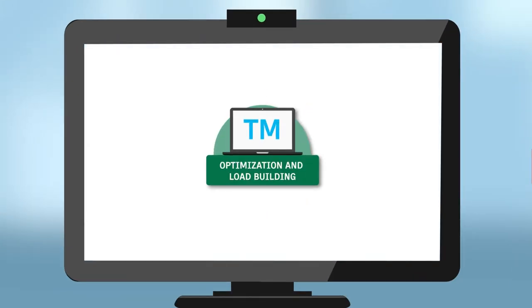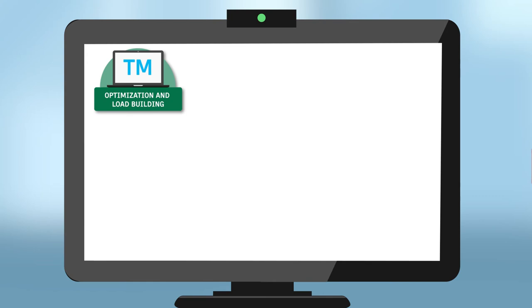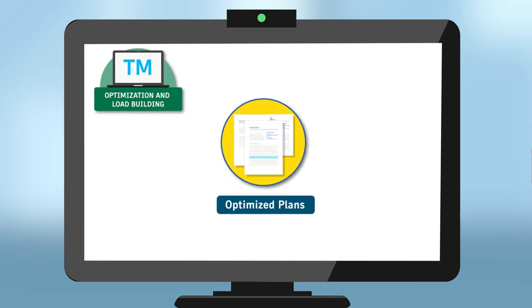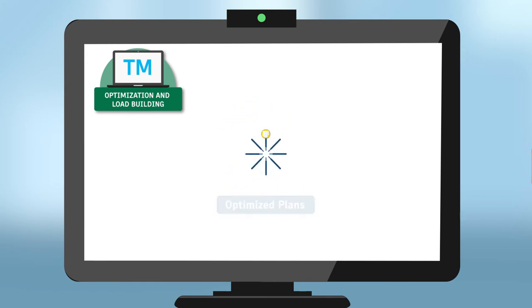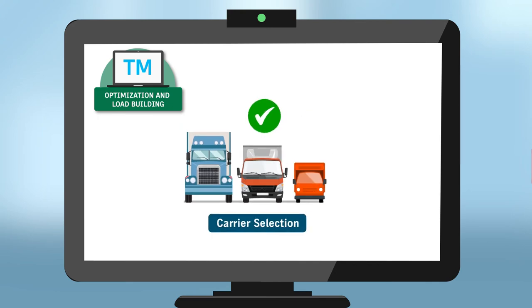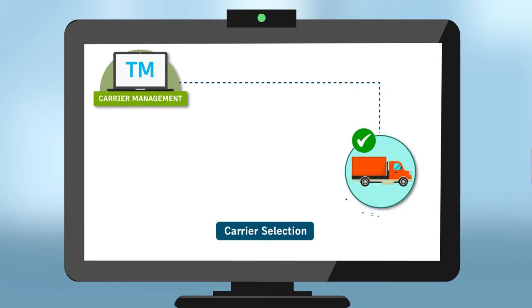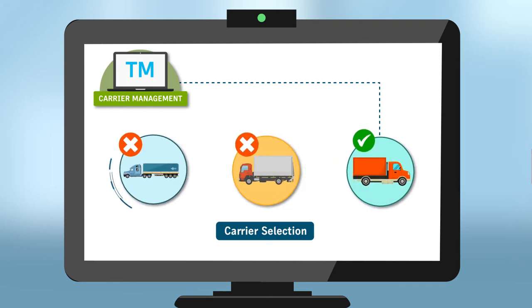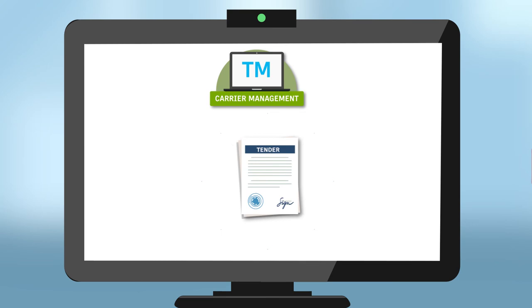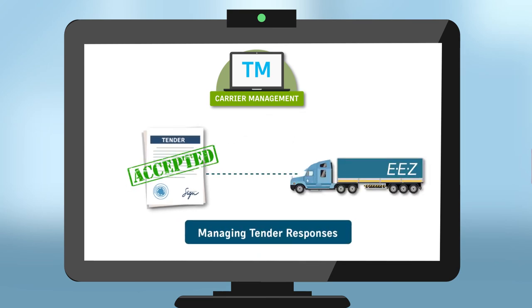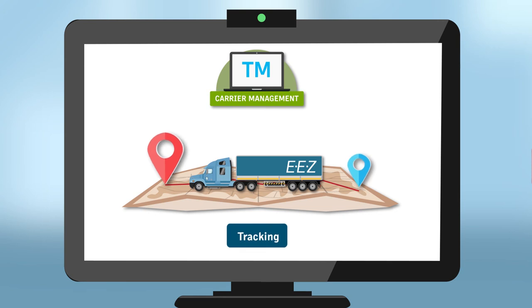The optimization and load building feature helps in planning shipments by generating optimal load plans based on the shipment details provided by the customer. It even suggests appropriate carriers for each load. The carrier management feature enables planners to either accept the suggestion or change the selected carrier. This feature also sends out tenders to the carrier services, manages tender responses, and can even help in tracking cargos.